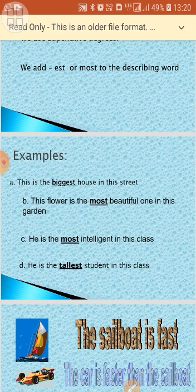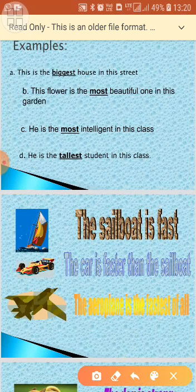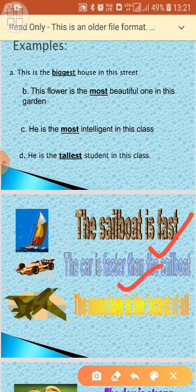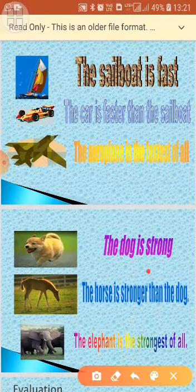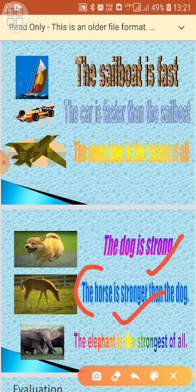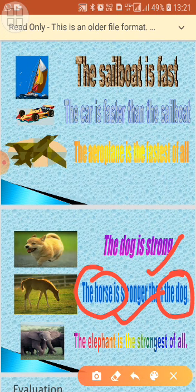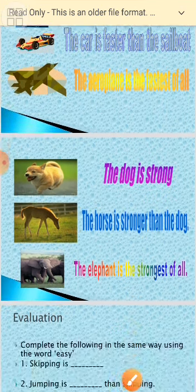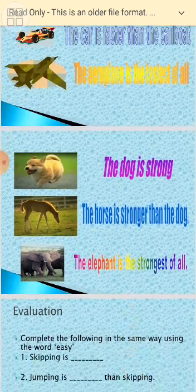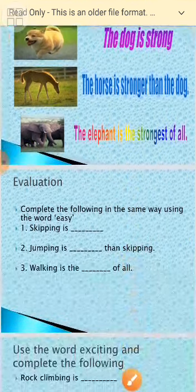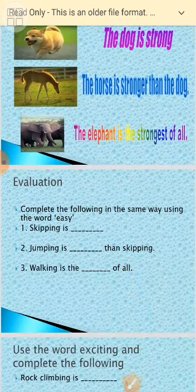Now let's look at the examples given in your book on page 125. 'The sailboat is fast. The car is faster than the sailboat. The aeroplane is the fastest of all.' Next: 'The dog is strong. The horse is stronger than the dog. The elephant is the strongest of all.'